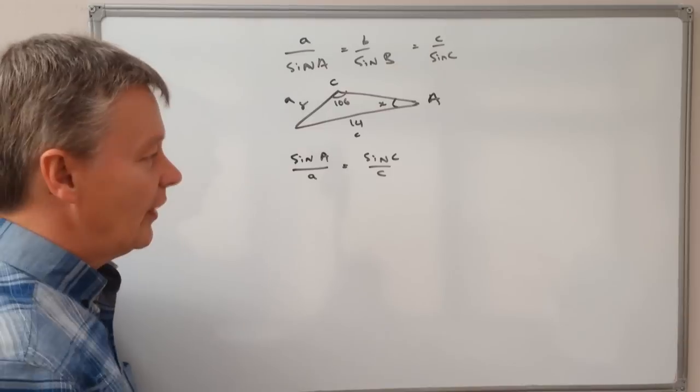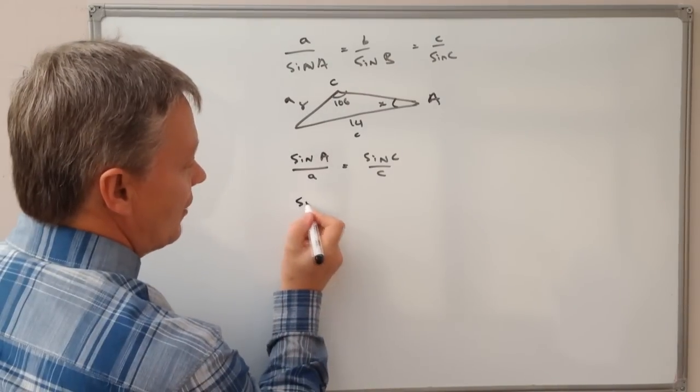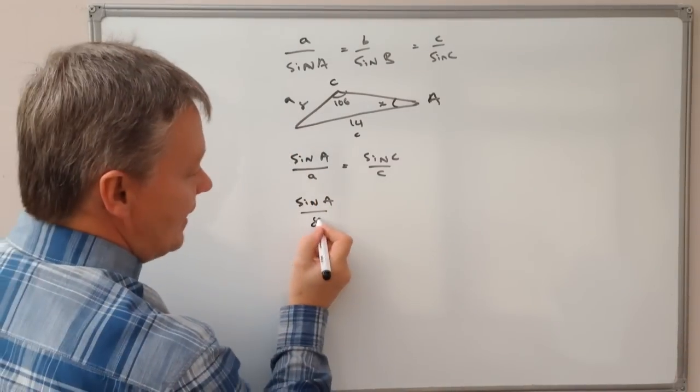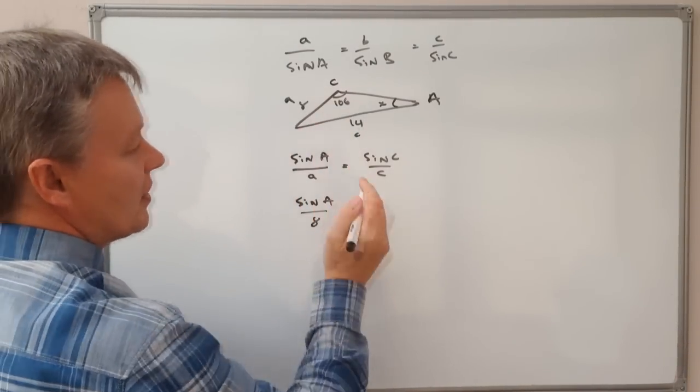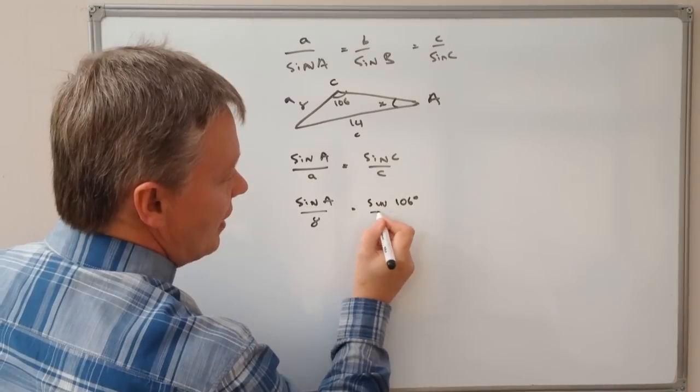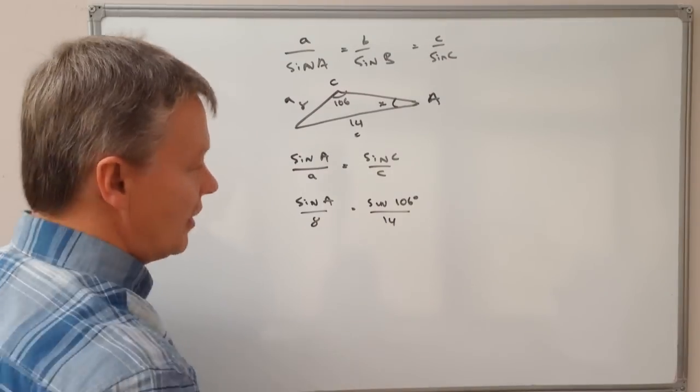Okay, so let's fill in some of the numbers themselves. So I've got sine A, which is the bit I'm going to find out, divided by A, which is eight. And on this side, I've got sine of 106 degrees divided by C, which is 14.